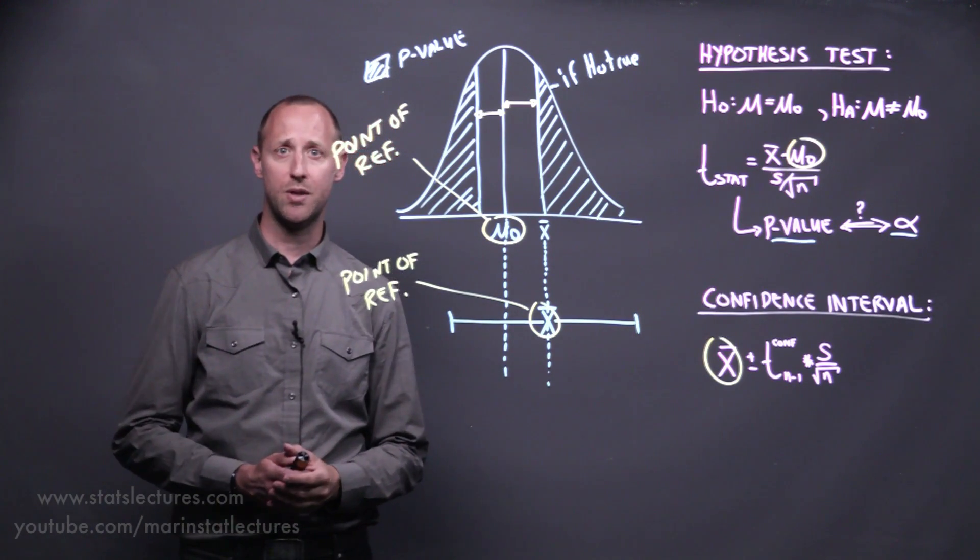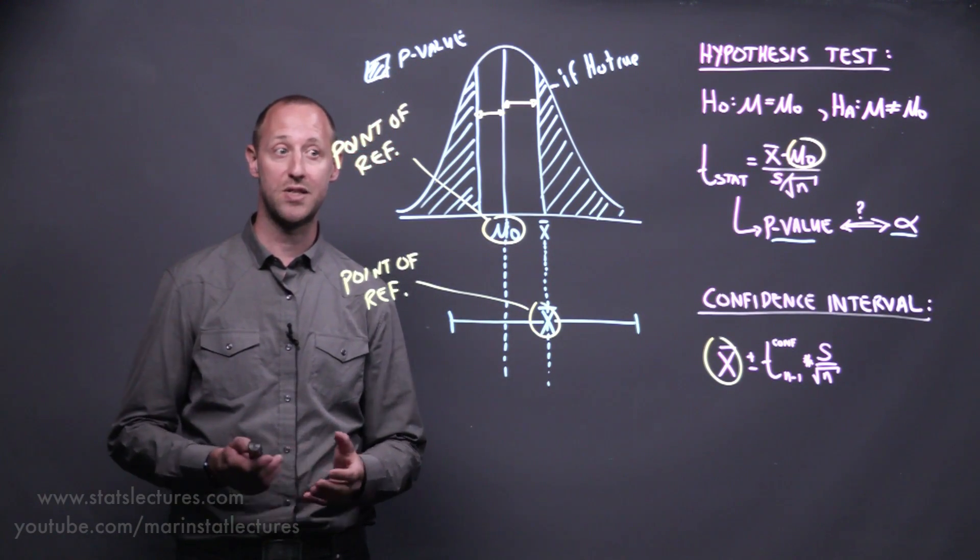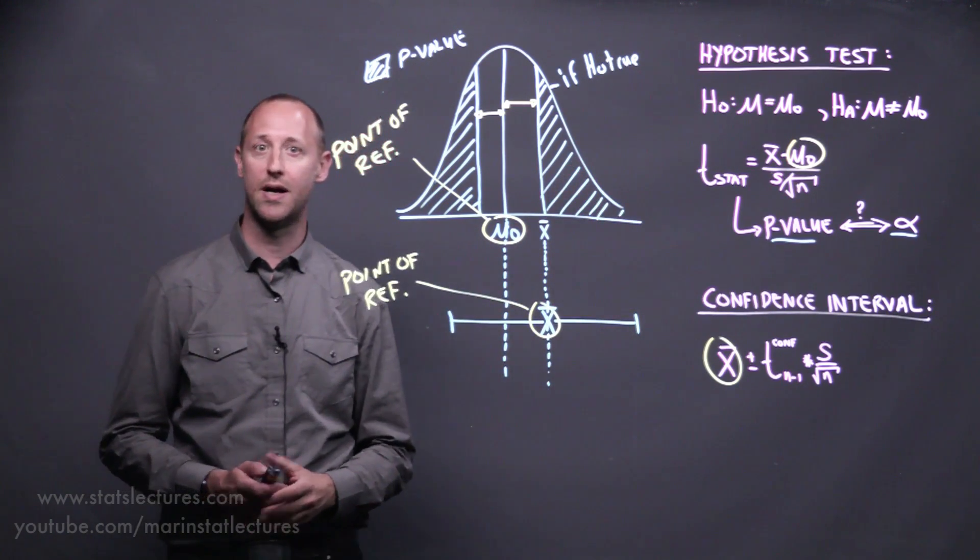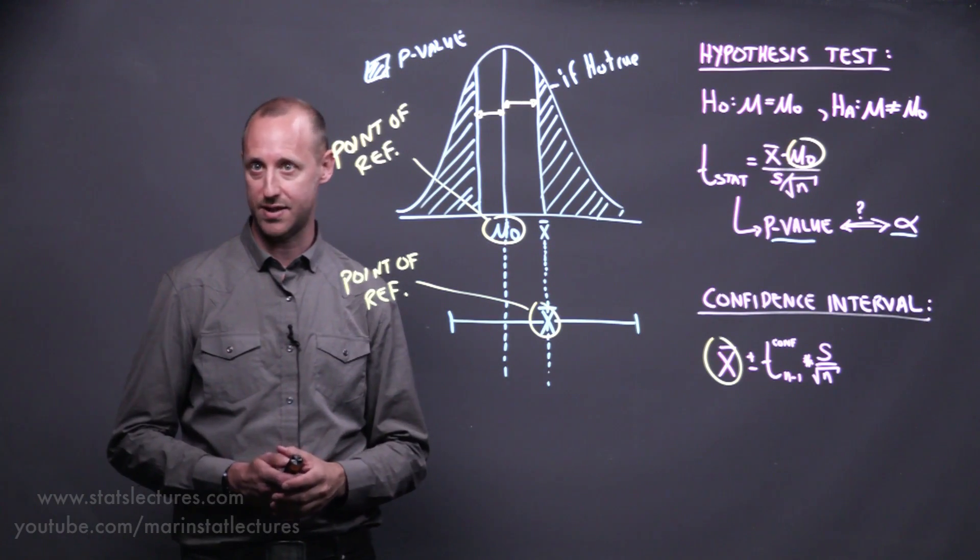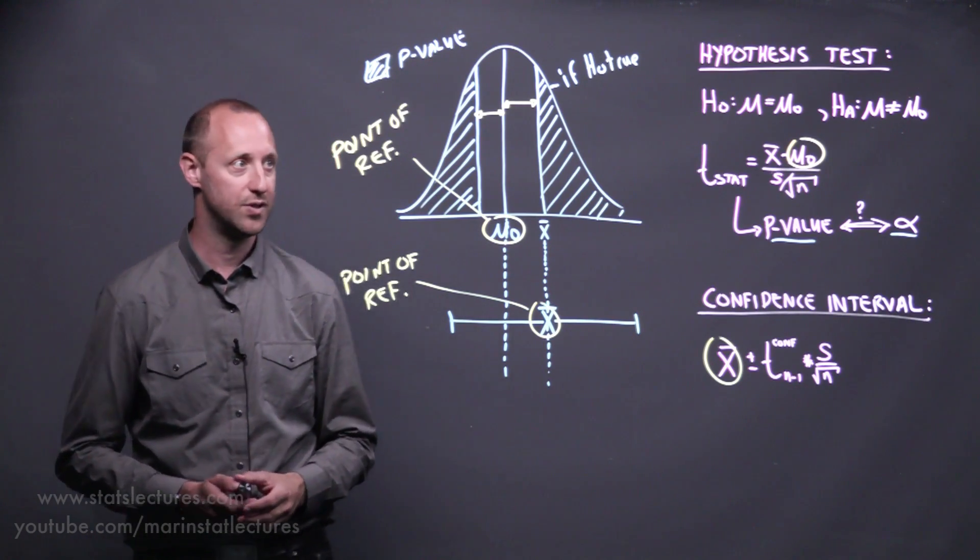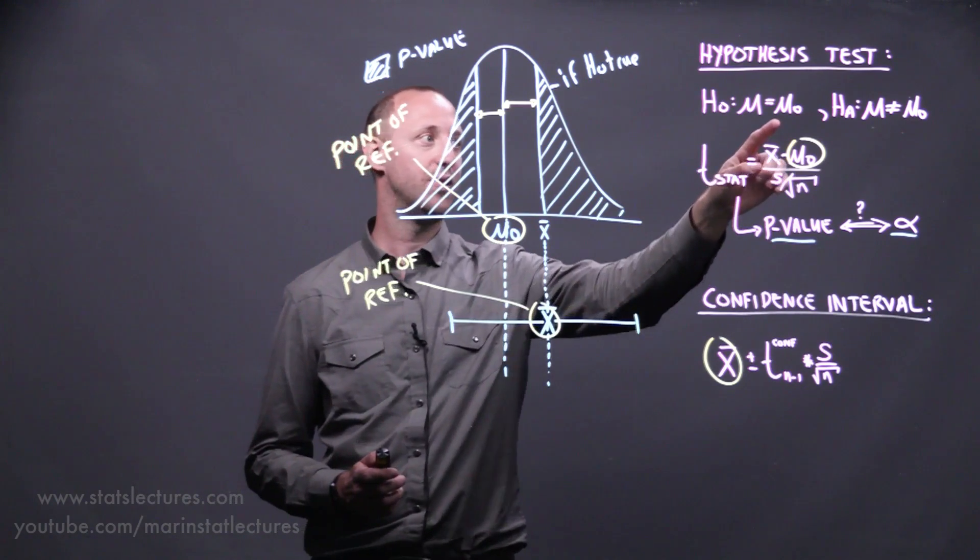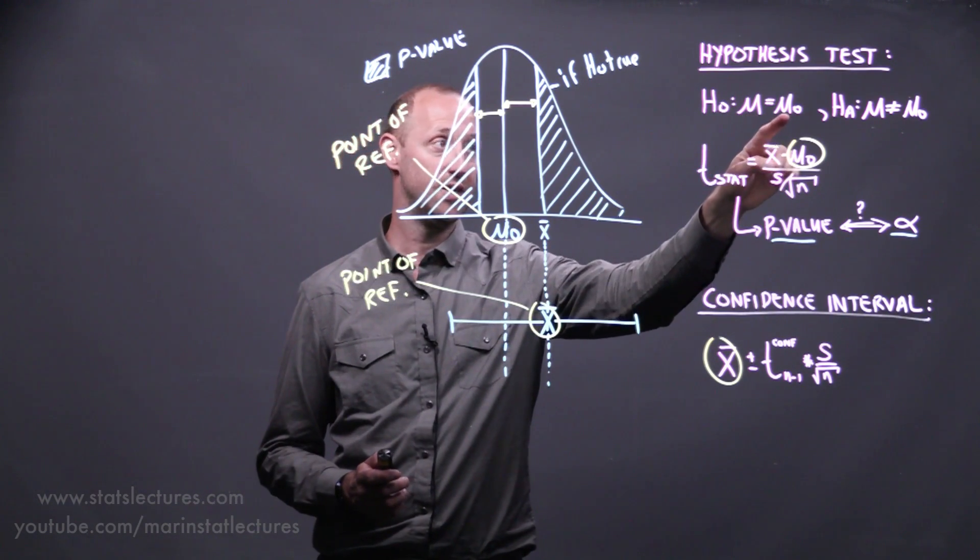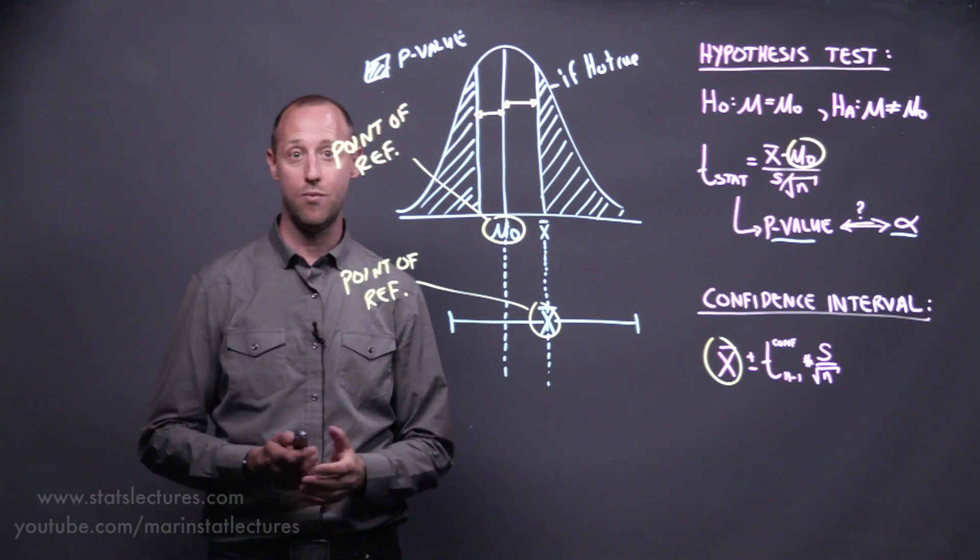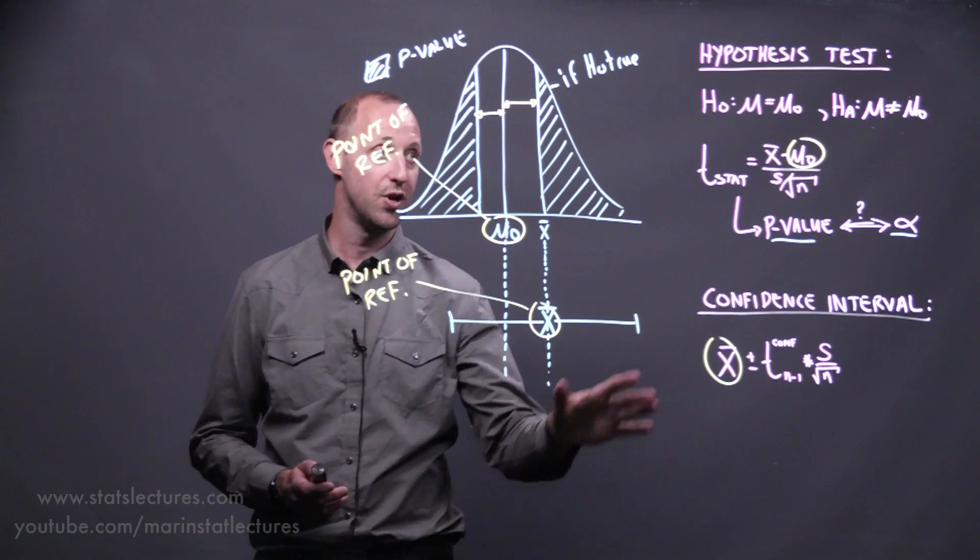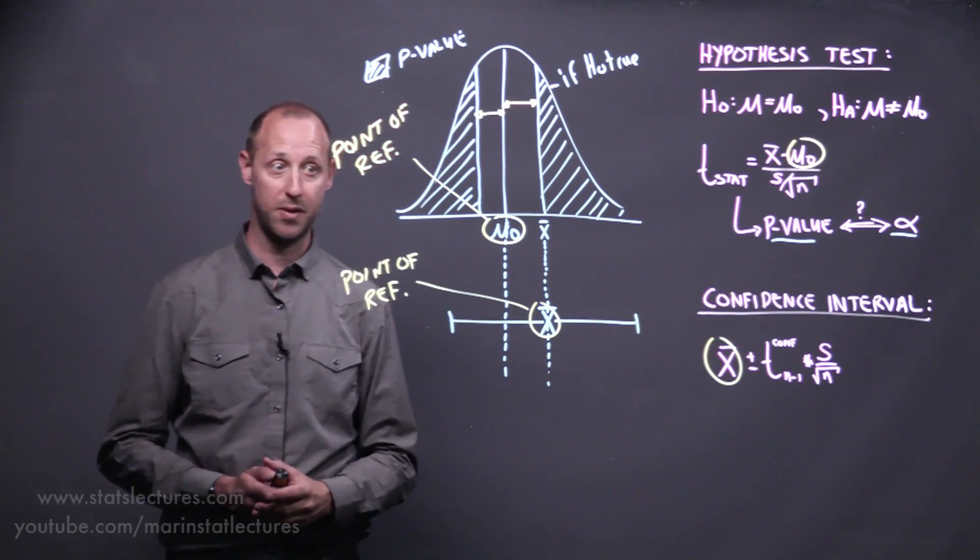My personal opinion is that I think it's best to report both of them. The p-value gives us some idea of the strength of the evidence against the null—how confident are we in saying that the true mean is different from some null value—while the confidence interval gives you a range of plausible values for the population mean.